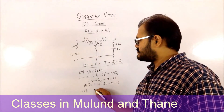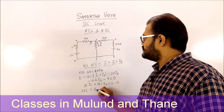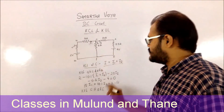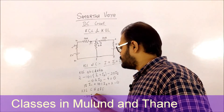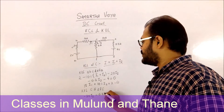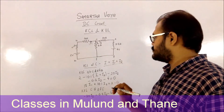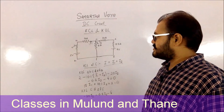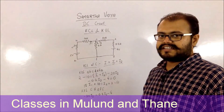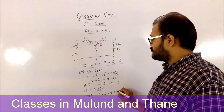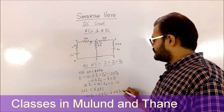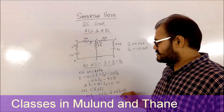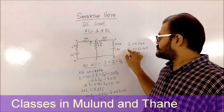Now consider the second loop CDEFC. Traversing this loop: −20·I2, then −0.2·I2, then −4 V. Going from E to F there is nothing. Then traversing the 5 Ω resistor opposite to the direction of current I1 gives +5·I1. Setting the sum equal to zero gives the second equation. Solving equations one and two simultaneously gives the values of I1 and I2.